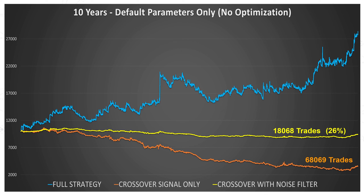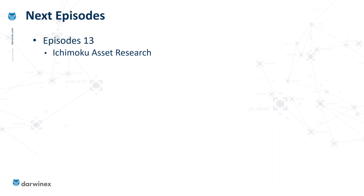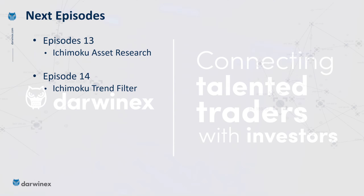In the final strategy, this produced about 2,500 trades, because it has also implemented a trend filter which reduced the number of trades, and we've performed some asset filtering as well. That brings me on nicely to the focus of the next episode, which will be asset research in relation to the Ichimoku strategy. And then following that, we're going to implement the trend filter.